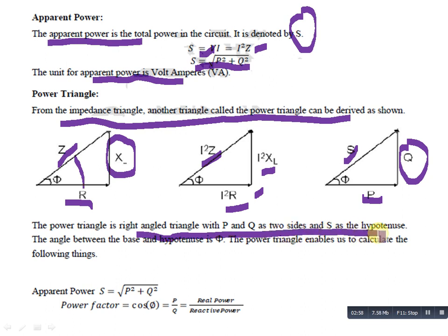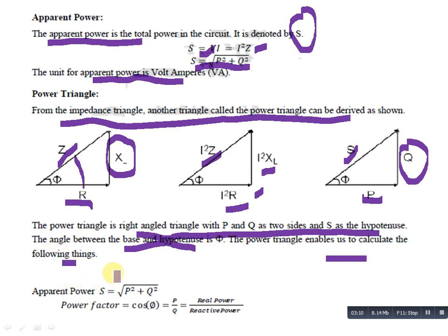The power triangle enables us to calculate the following: apparent power is the square root of P squared plus Q squared. Power factor is denoted by cos phi, and power factor equals P upon Q — meaning real power upon reactive power — which is also known as the power factor.